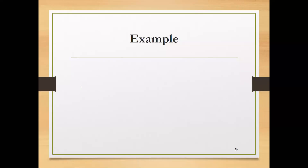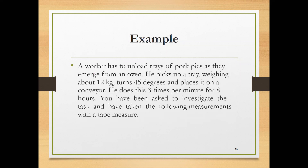We will solve an example related to the NIOSH lifting equation. A worker has to unload trays of pork pies as they emerge from an oven. He picks up a tray weighing about 12 kilograms, turns 45 degrees and places the tray on a conveyor. He does this 3 times per minute for 8 hours.